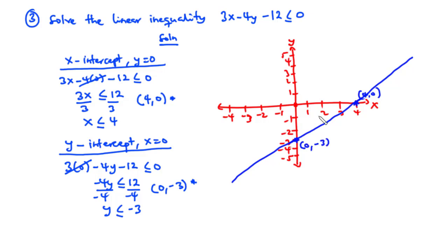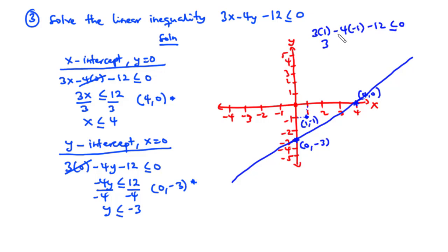Now we pick a point above the line — (1, −1) — and substitute into the inequality: 3(1) − 4(−1) − 12 ≤ 0 gives 3 + 4 − 12 = −5 ≤ 0, which is a true statement. This satisfies the linear inequality, so we shade the region above the line.